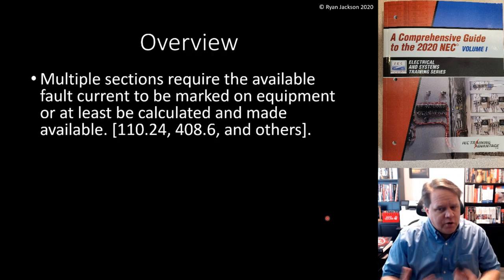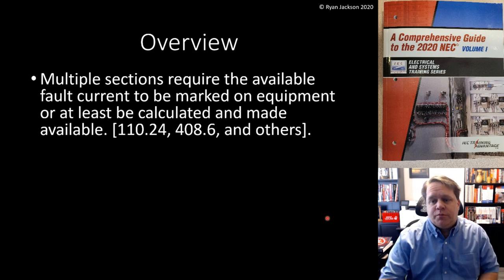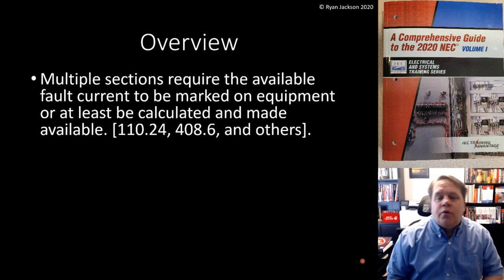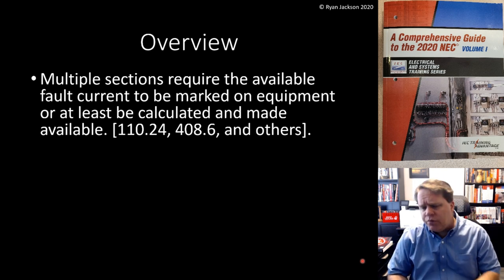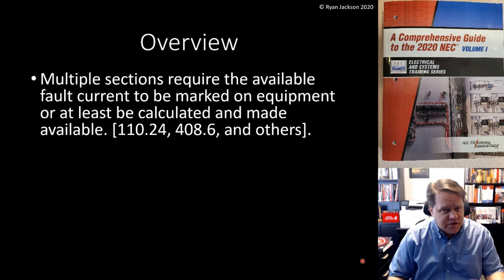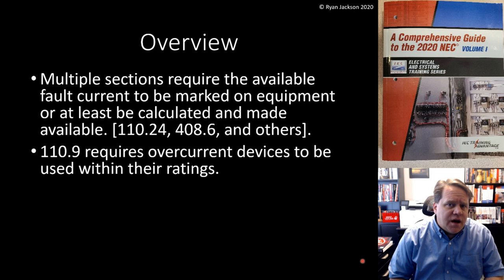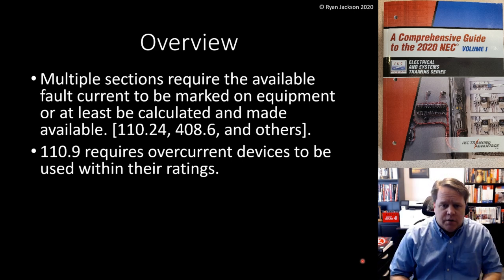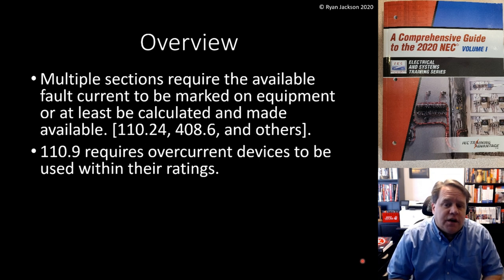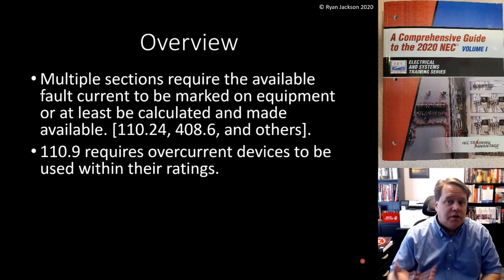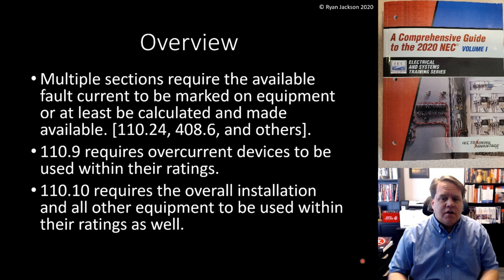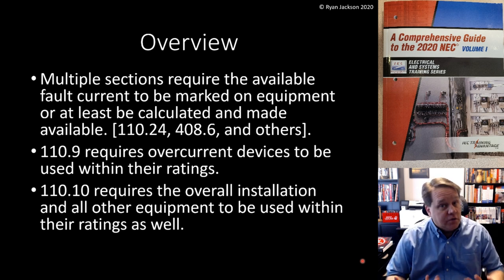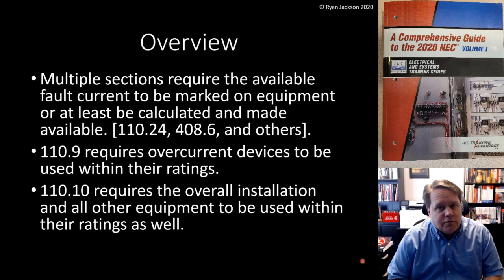So the overview - why do we need to talk about this? What are the code rules pertaining to these issues? Multiple sections require the available fault current to be marked on the equipment or at least be calculated and made available to those that need it: 110.24, 408.6, and others. 110.9 is where we really get into the safety requirements, and that requires that overcurrent protection devices be used within their ratings - we're going to call those interrupting ratings. And 110.10 requires that the overall installation and all other equipment must also be used within their ratings as well.